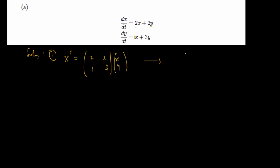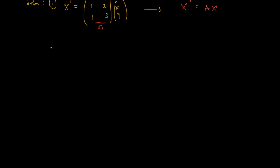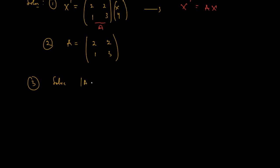I wrote that in matrix form so I could compare it with the standard form x prime = Ax. From here I can identify my matrix A. So the second step is to find A. My A equals [[2, 2],[1, 3]]. Now the next step is to find the eigenvalues of A, which means we want to solve det(A minus lambda·I) equals 0.